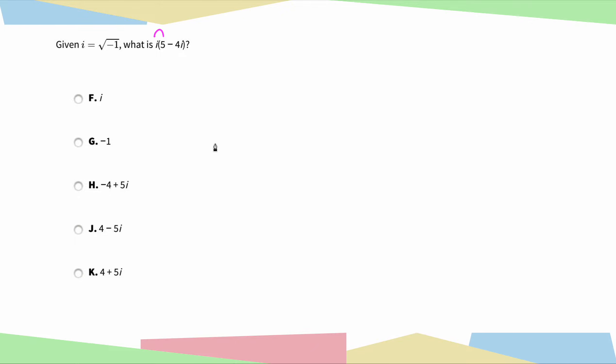So first we're just going to do i times 5, which is just 5i. And now we're going to do i times negative 4i, which is going to give us negative 4i squared.